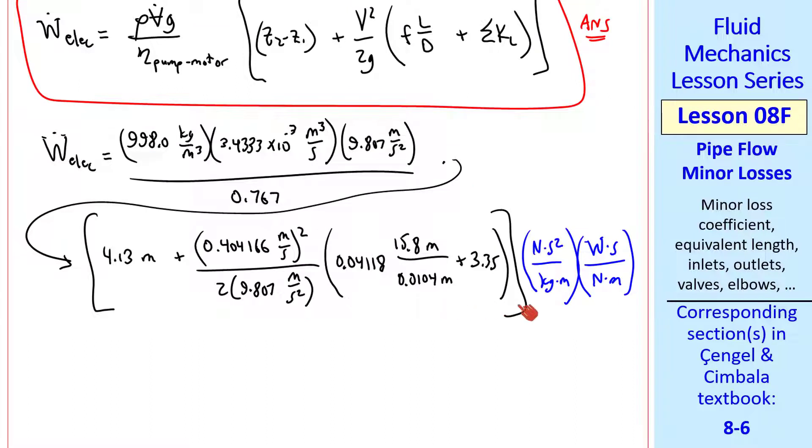I plugged in all the numbers, as well as two unity conversion ratios. This is all nearly identical to the previous example, except we have sigma KL here in place of the given minor loss. I get 2.05 watts.